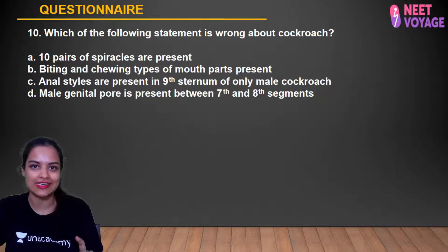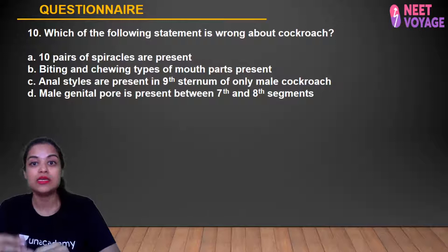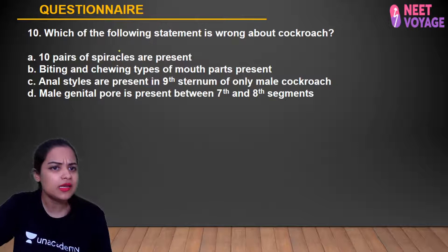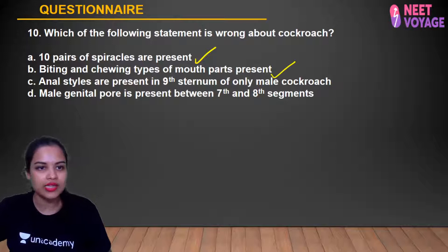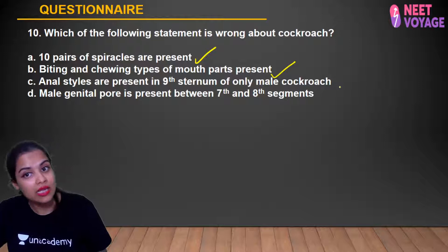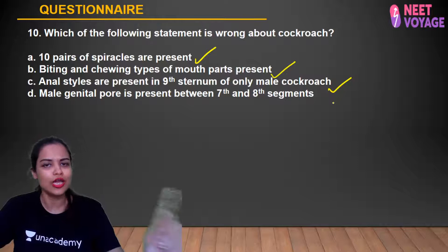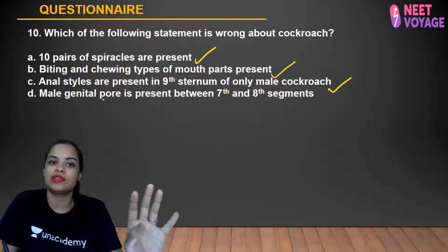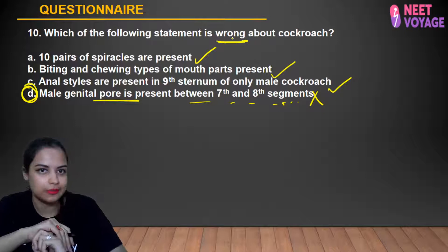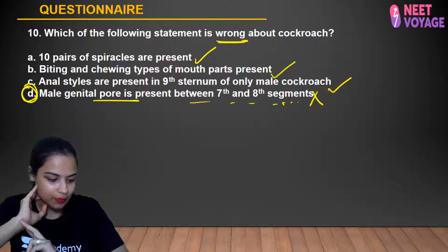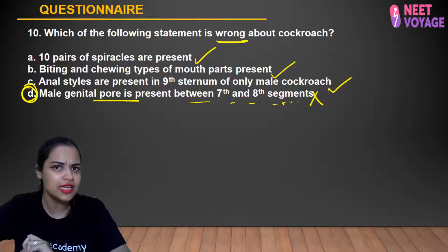Question 10: Which statement is wrong about cockroach? 10 pairs of spiracles are present (2 pairs in thorax, 8 pairs in abdomen) — correct. Biting and chewing type mouthparts — correct. Anal styles present on the 9th sternum of only male cockroach, used in copulation — correct. Male genital pore: no pore is present; they have a gonapophysis instead — this is the incorrect statement. D is the answer. Anshika, Samreen, Simran, and Anusha gave the correct answer D.